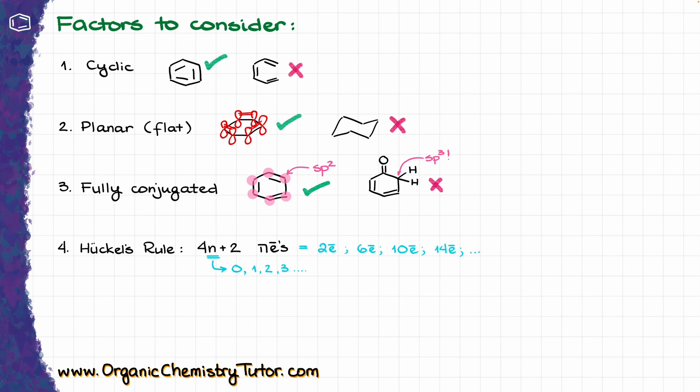It's always a good idea to check the factors that determine aromaticity in this order, because if we are going to break rule 1, 2, or 3, then it doesn't matter how many electrons you are going to have. If you break one of the first three rules, then your molecule is going to be non-aromatic.